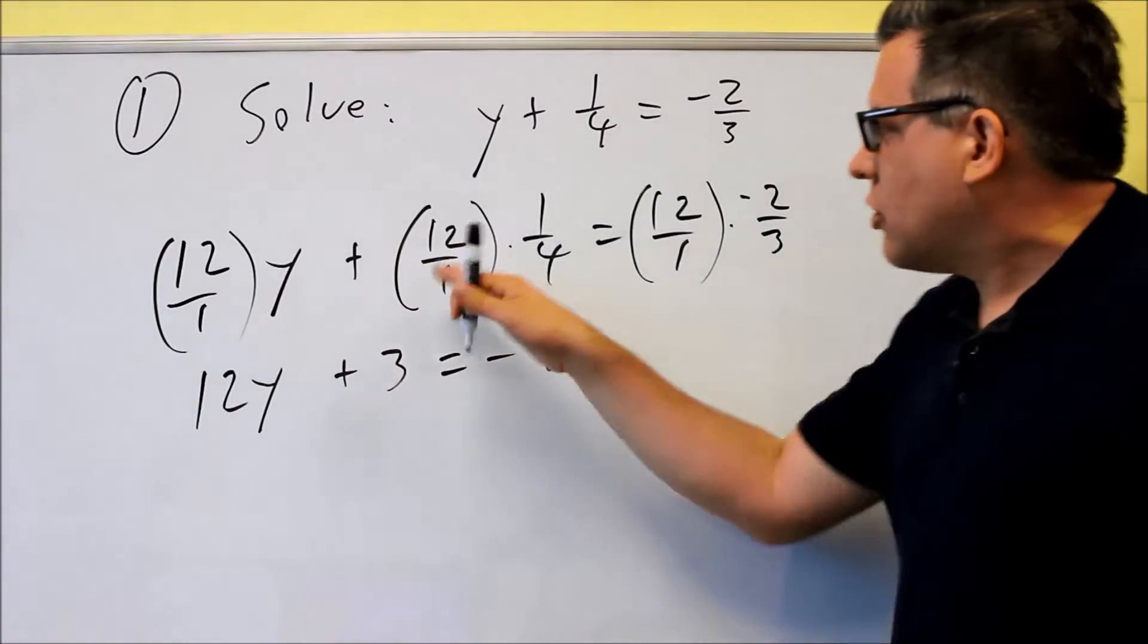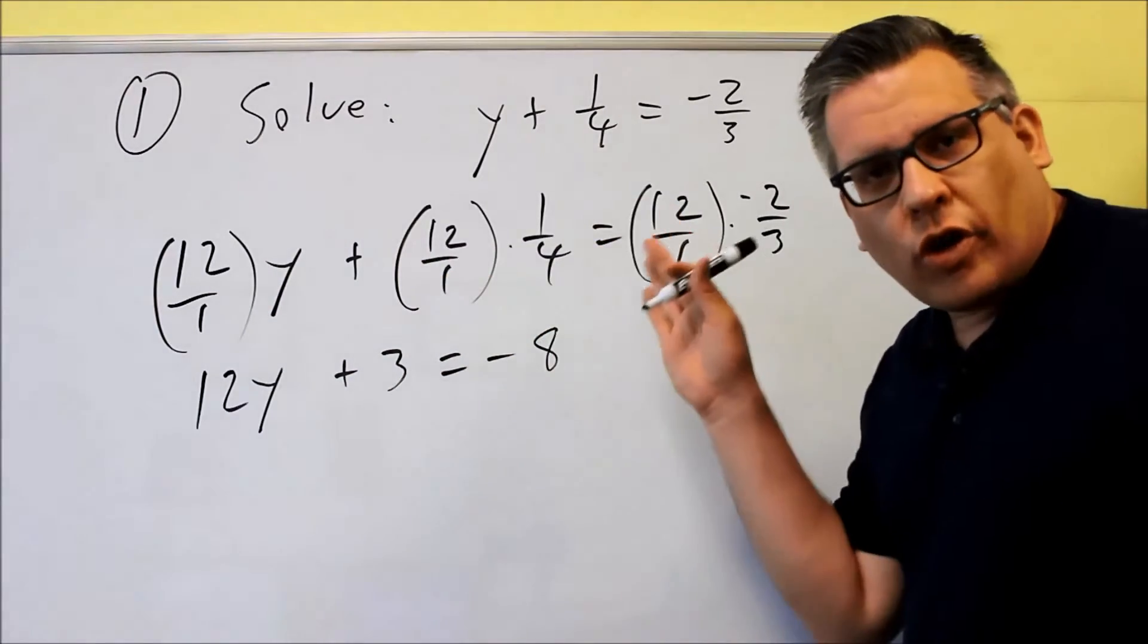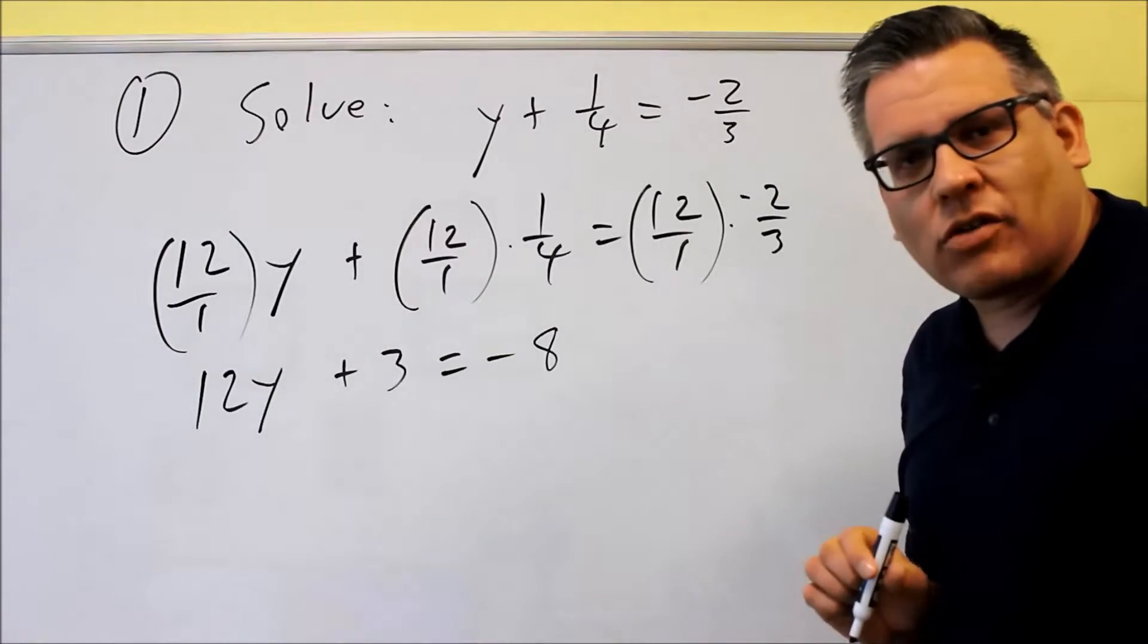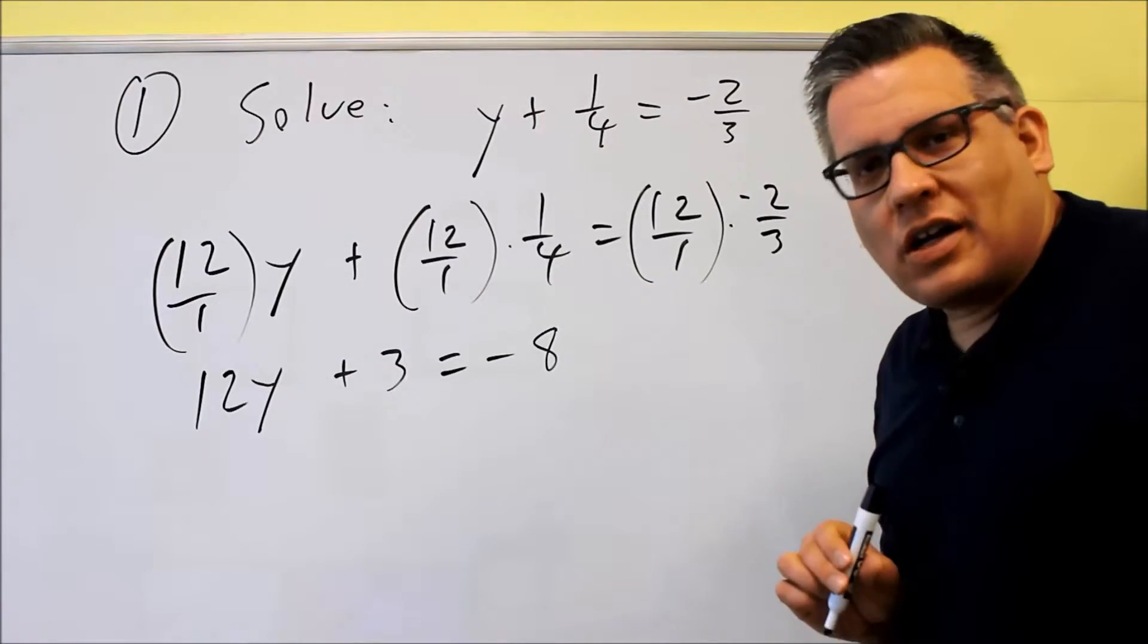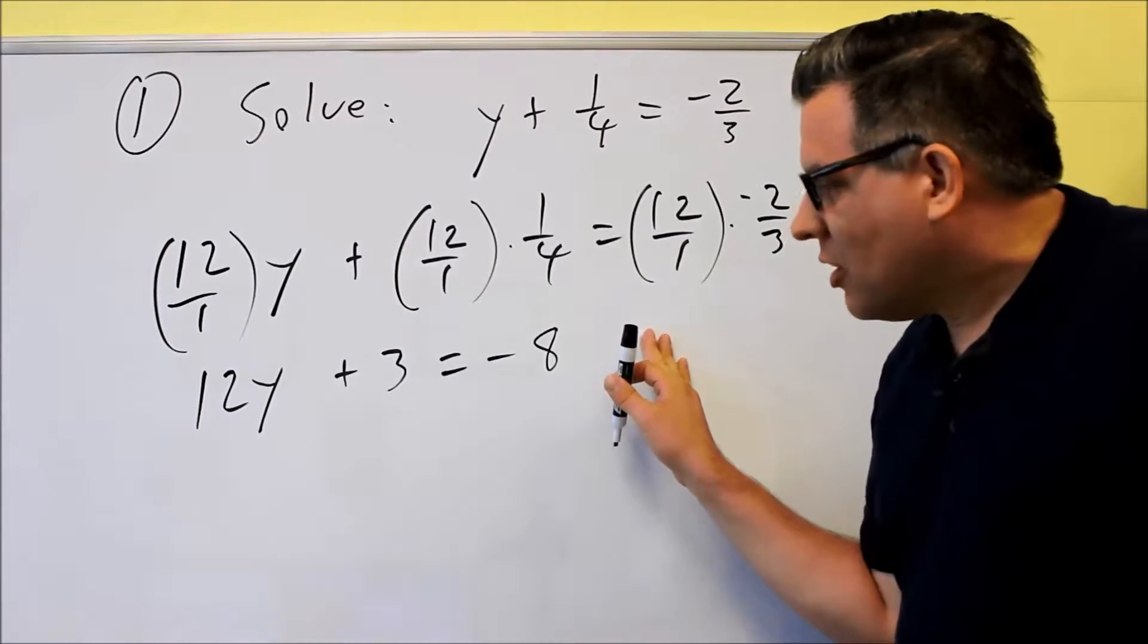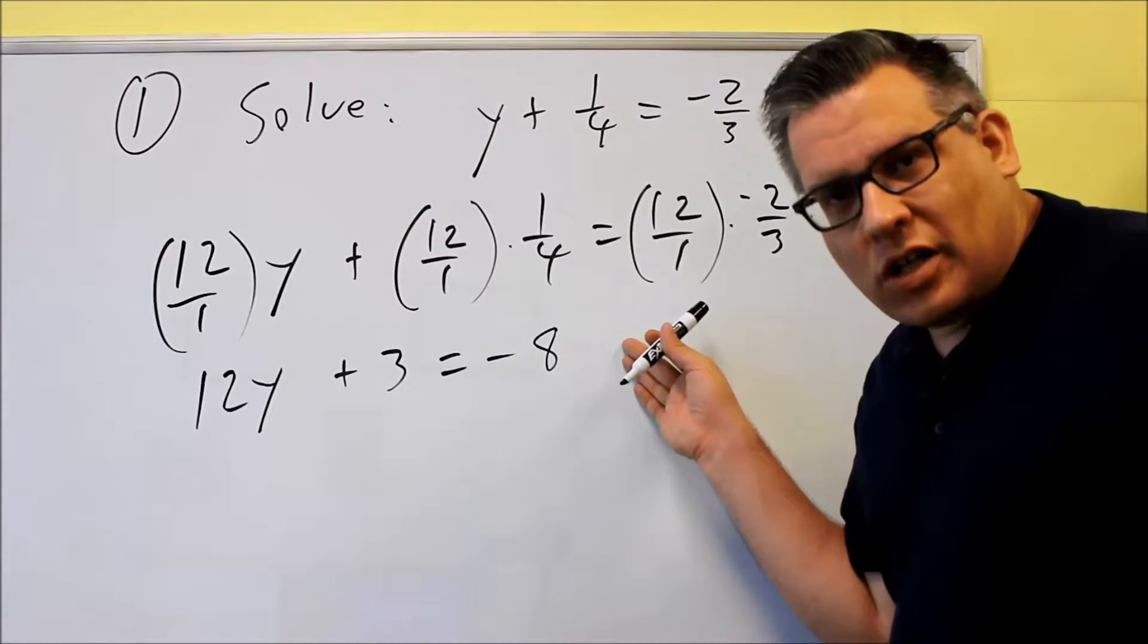You can see what happened because we did this process where we multiplied the whole equation, both sides, by the common denominator. That allows us to cancel out the fractions completely, and I don't need to worry about common denominators or anything else because I've cleared them all out in that step.